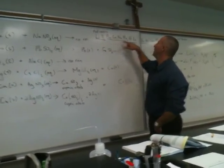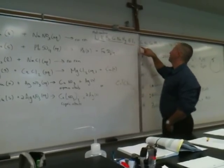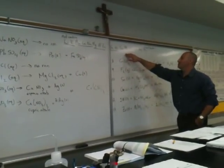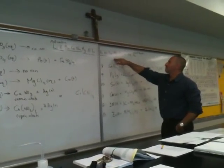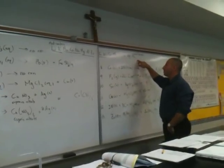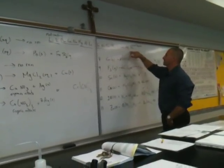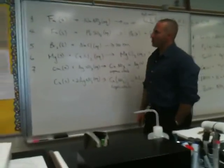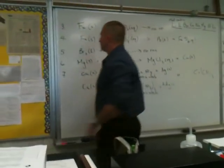One way of memorizing the series is to make little words out of the element symbols: LiK, BaCaNa, MgAlZn, FeNi, Sn, Pb. Then you can memorize the rest because it's the coinage metals. We're going to start from number three on our sheet.